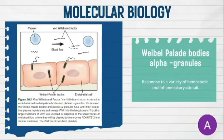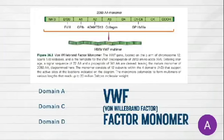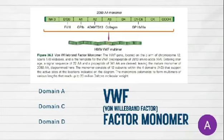The ADAMTS13 gene encodes an enzyme that processes the large protein called von Willebrand factor. ADAMTS13 is involved in the first step of blood clotting at the site of injury, which is to help cells called platelets stick together and attach to the walls of vessels, forming a temporary plug.